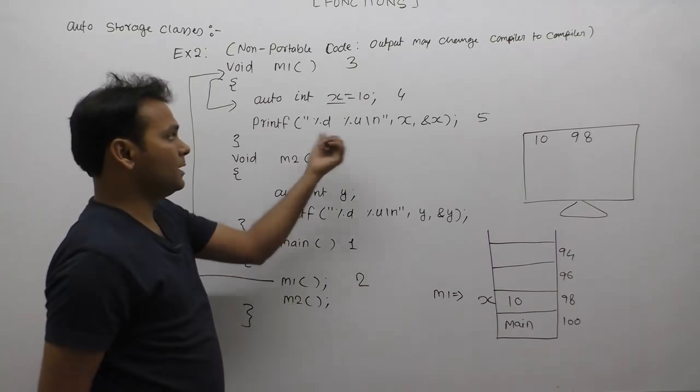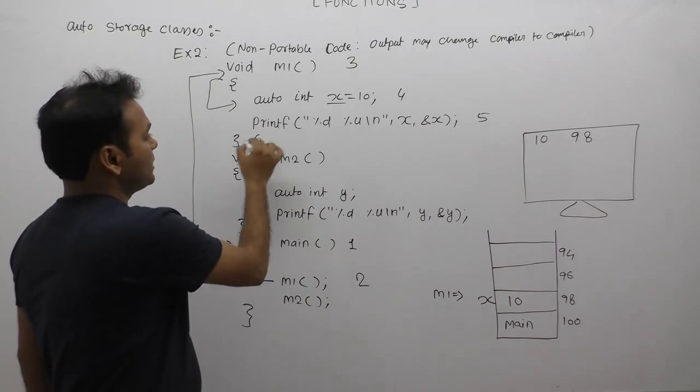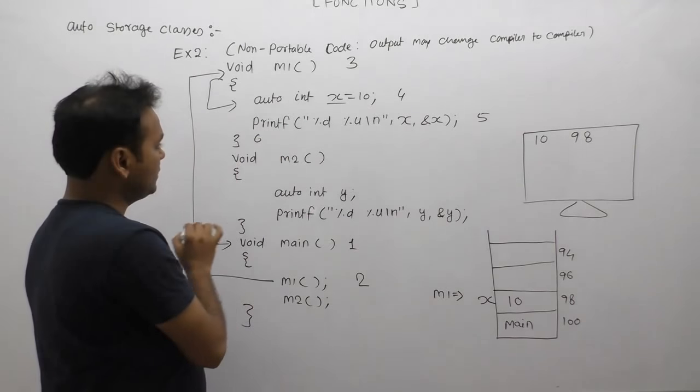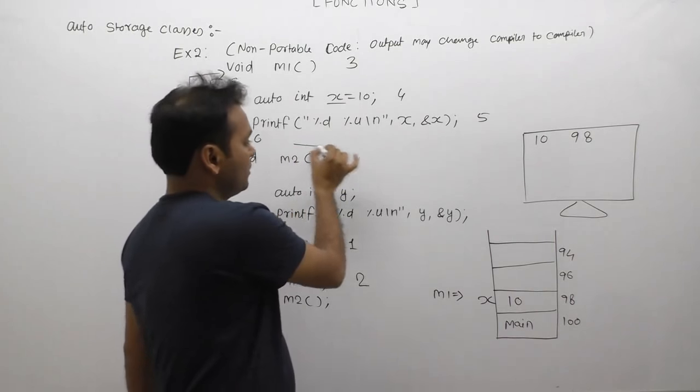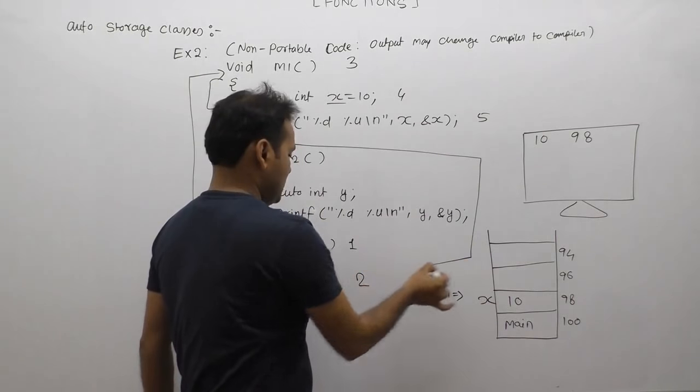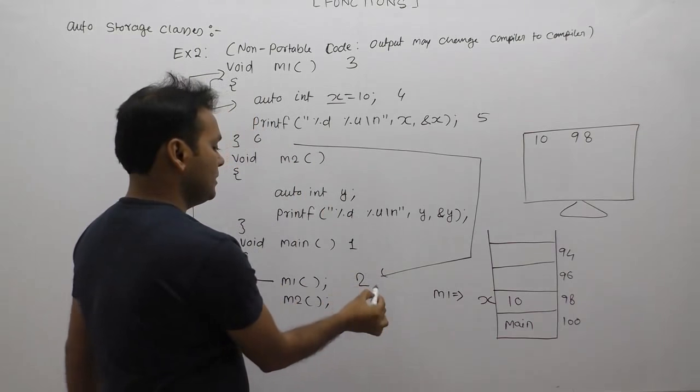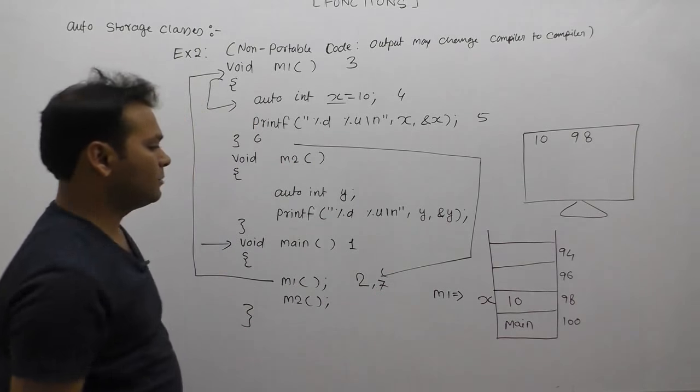Address is also 98. After sixth statement, means execution finished, control sends back to its calling place, calling means inside main. This is the seventh case and m1's execution is complete.